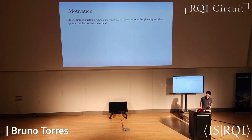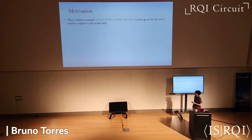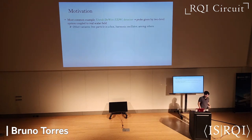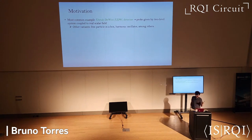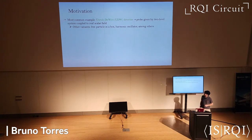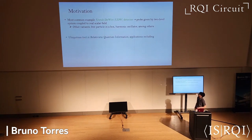the Unruh-DeWitt detector, which is a two-level system coupled to a scalar field. There are a few variants we can also consider, such as a free particle in a box — the first example considered by Unruh — and a harmonic oscillator detector, which is the one most relevant for what I'll be discussing today, among many others.